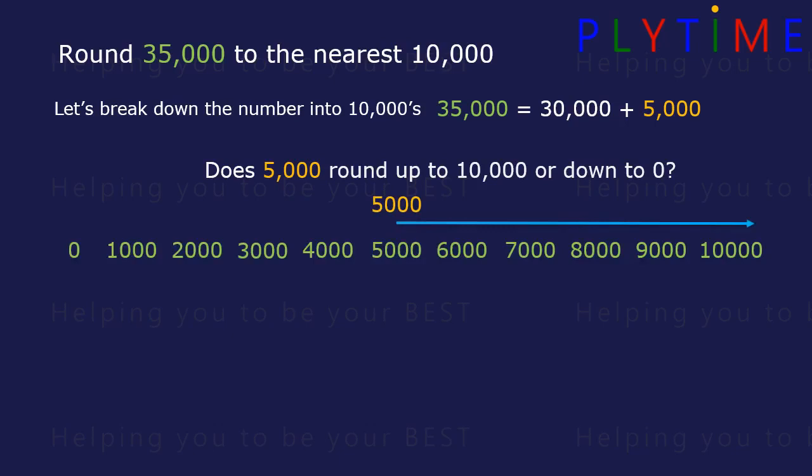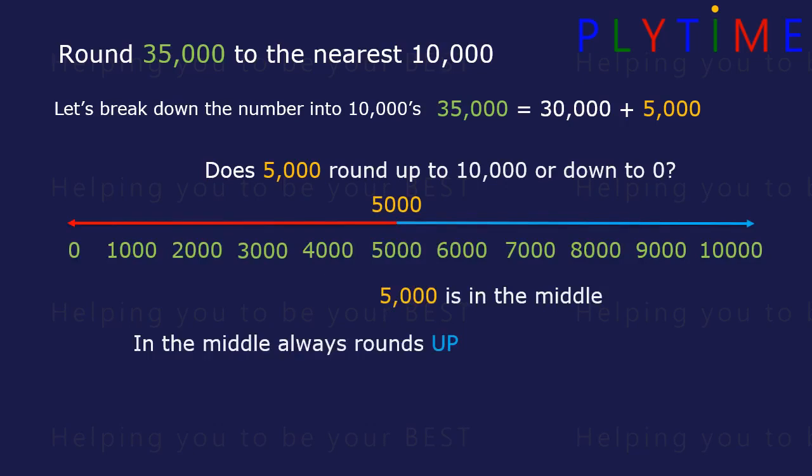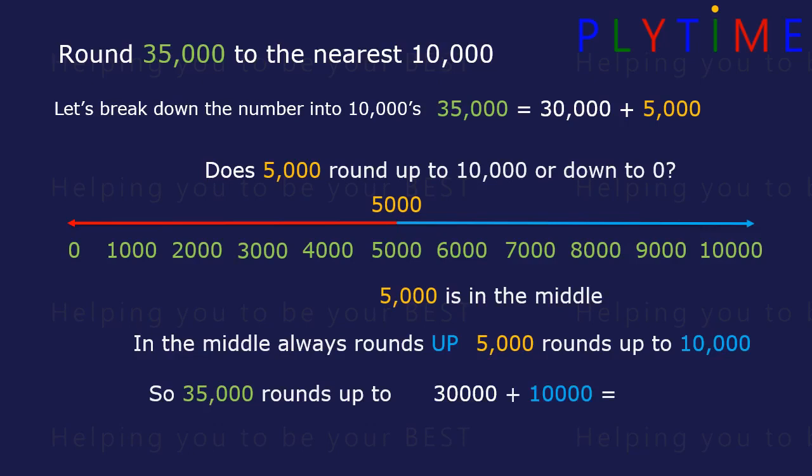5,000 is exactly in the middle and in the middle always rounds up. So 5,000 rounds up to 10,000. So 35,000 rounds up to 30,000 plus 10,000 or 40,000.